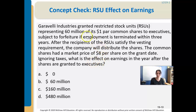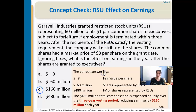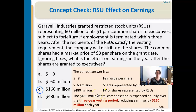The second example asks what is the effect on earnings in the year shares are granted to executives. You take fair value per share times the number of shares, arriving at $480 million total. Since it's a three-year vesting period, you divide $480 million by three years to get compensation expense of $160 million recorded in that first year.